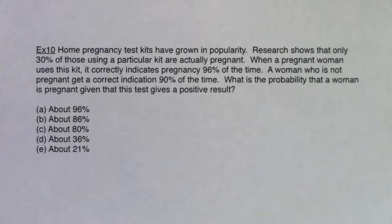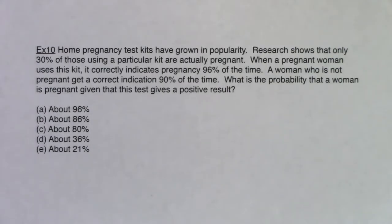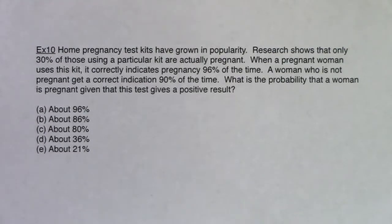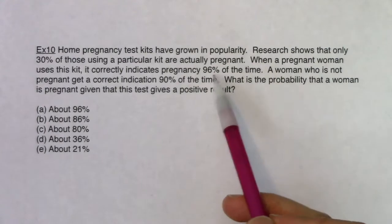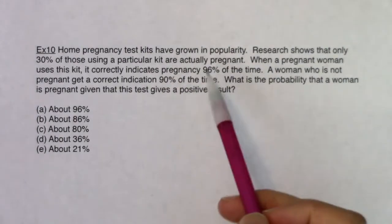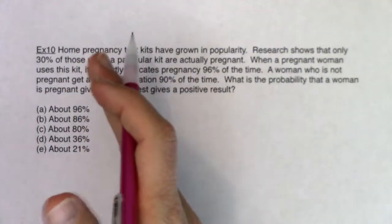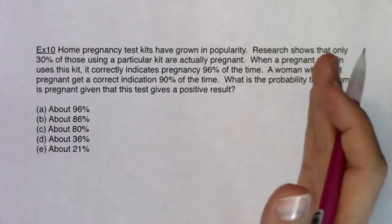So home pregnancy test kits have grown in popularity. Research shows that only 30% of those using a particular kit are actually pregnant. When a pregnant woman uses this kit, it correctly indicates pregnancy 96% of the time. A woman who is not pregnant gets a correct indication 90% of the time. What is the probability that a woman is pregnant given that this test gives a positive result? So if I take a step back, I can hear two categorical variables: are the women pregnant or not, and do they get a positive test result?